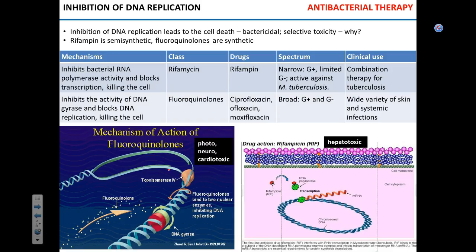Next, we're going to talk about two drugs that inhibit nucleic acid synthesis. The title of the slide is a little confusing because it says inhibition of DNA replication — it should be more like nucleic acid synthesis, because there are two major classes of drugs that affect synthesis of DNA and RNA in the bacterial cell. One is fluoroquinolones. You've probably all heard that name — ciprofloxacin, or cipro — that's probably the most frequently prescribed example.